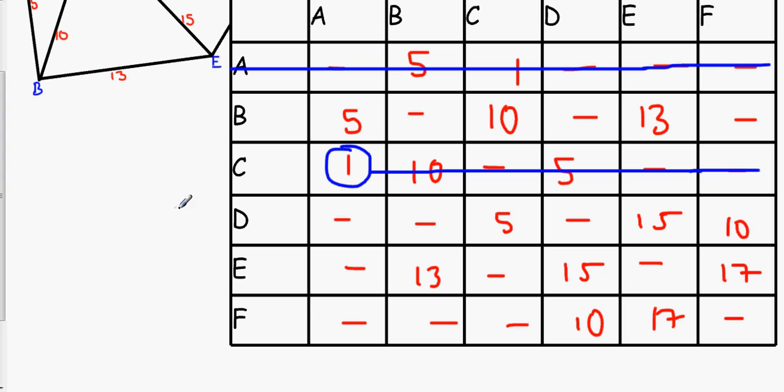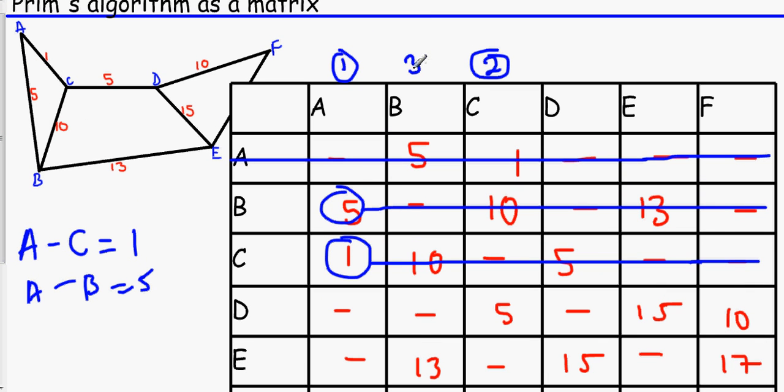So, now we need to find the smallest number in rows A and C and that is 5 and 5. Oh, look at here. So, we can choose. Remember, you can always do that. You can always write down as a trace. So, let's say, I'm going to pick this one. A to B. A to B equals 5. So, you cross out the rest. And since this is in row B, column B is now your third vertex.